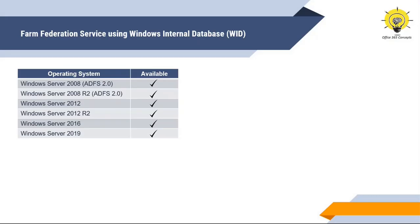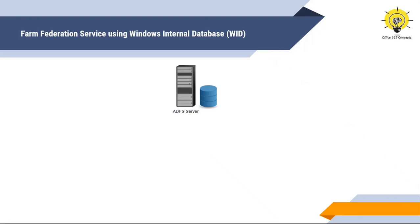The next type of deployment is Farm Federation Server. We're going to install ADFS using Windows Internal Database or WID. A farm is basically a boundary in which you have deployed multiple ADFS servers. This type of deployment is supported from Windows Server 2008 and is still supported. When we install the ADFS server role, we can choose the default method, in which case Windows Internal Database or WID gets installed with the ADFS server.